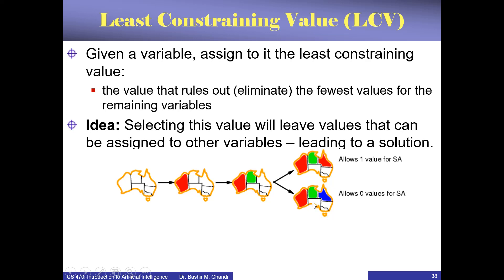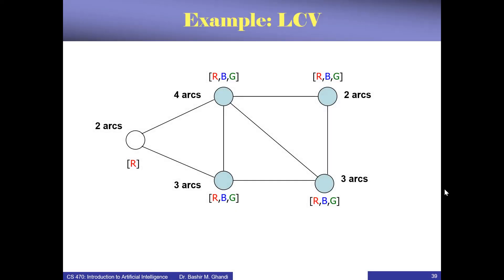So the algorithm would terminate if you choose blue. This heuristic says don't assign blue — assign red instead. Let's see a more complete example. Suppose we have decided to go for the node with the most degree using the most constrained variable heuristic. The question is what value should we assign to it?